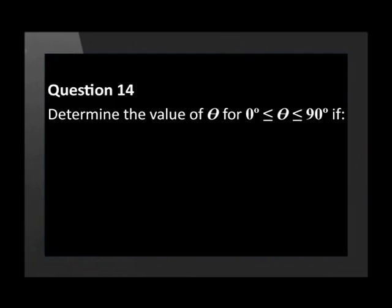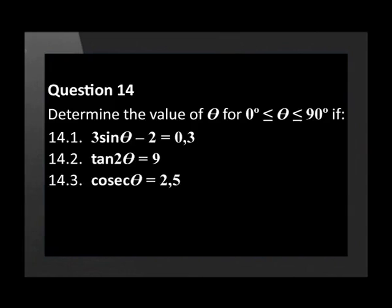Now let's move on to some more complex trig equations. Question 14. Determine the value of the following equations for theta is between 0 and 90 degrees: if 3 sin theta minus 2 equals 0.3, tan 2 theta equals 9, and cosec theta equals 2.5.